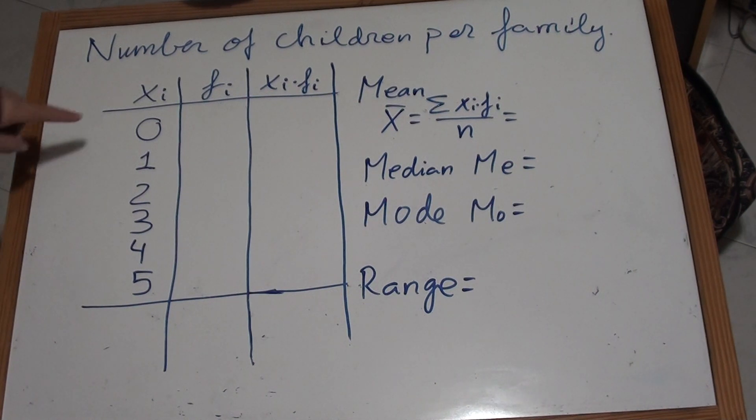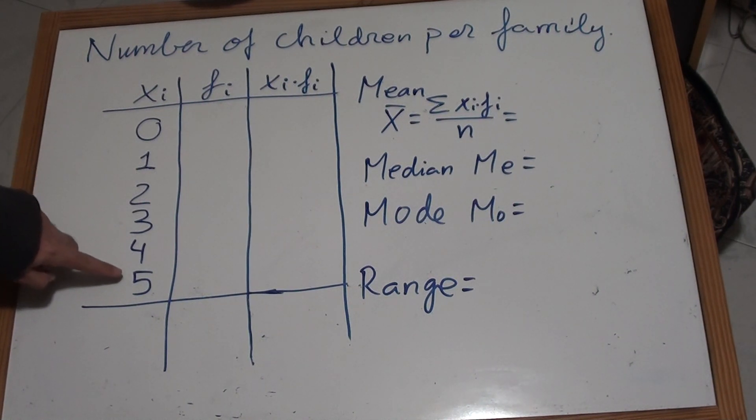We may have 0 children per family, or 1 child per family, or 2 children, or 3 children, or 4, or 5, but nothing between 1 and 2. It is not possible having 1.5 children per family. So that is why it is discrete.